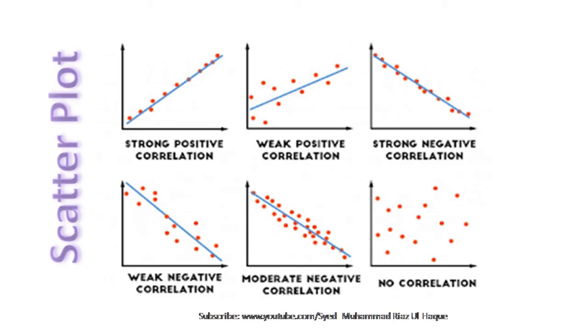Looking at another chart with more scatter plot diagrams, you will also see a regression line. There is strong positive correlation, weak positive correlation, strong negative correlation, weak negative correlation, moderate negative correlation, and no correlation. The regression line shows the average line and how close the data points are to it, indicating the trend of the relationship — whether positive, negative, or no correlation.